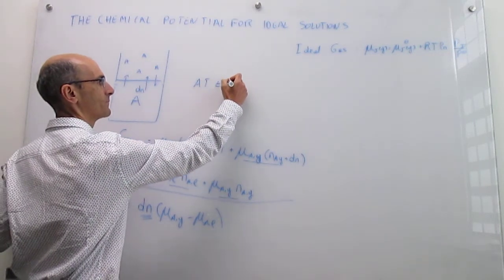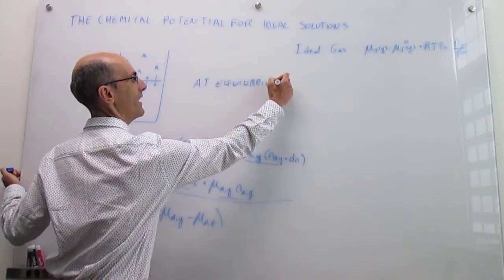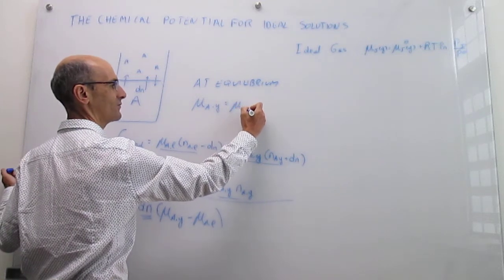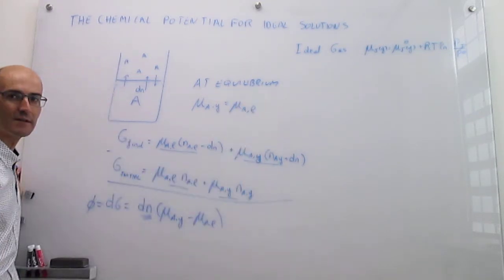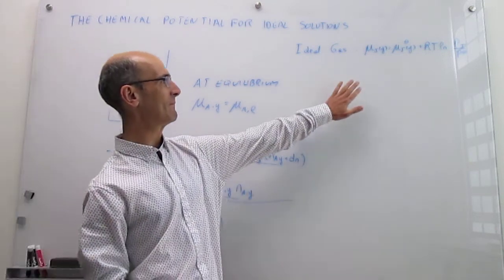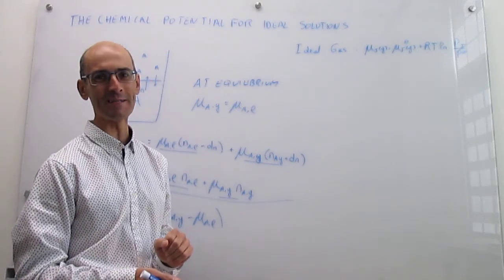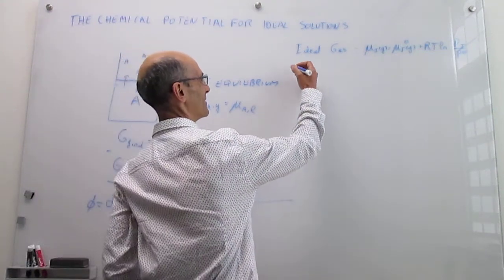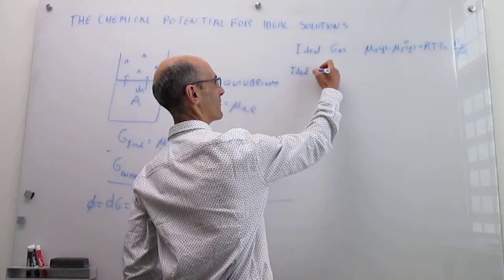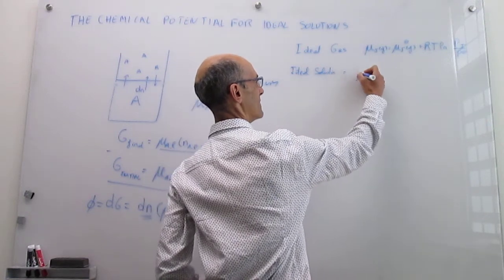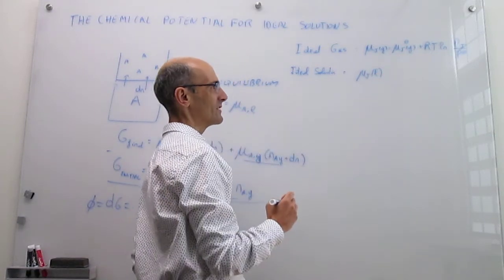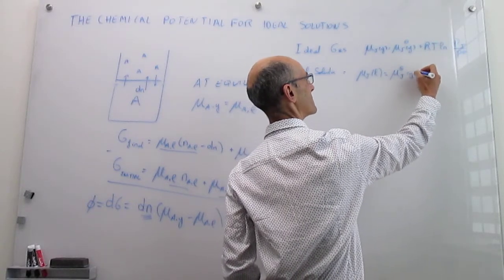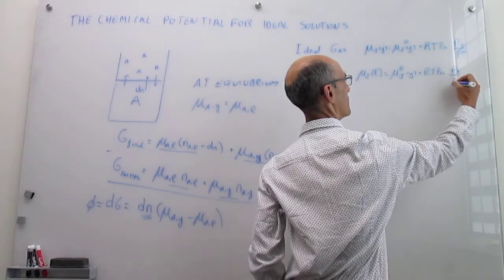If you are at equilibrium, then the chemical potential of substance A in the gas phase must be identical to the chemical potential of substance A in the liquid phase. This is very, very useful, because now we can take the expression for the chemical potential of a gas and realize it also applies to the liquid. We call this an ideal solution, and we can write: μ_A(liquid) = μ°_A(gas) + RT ln(P_J / P°).